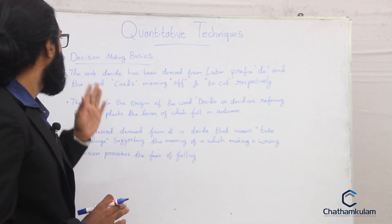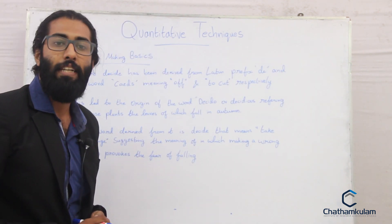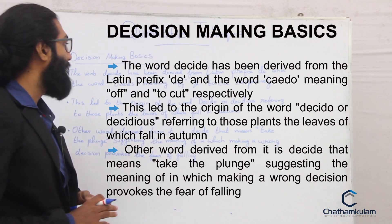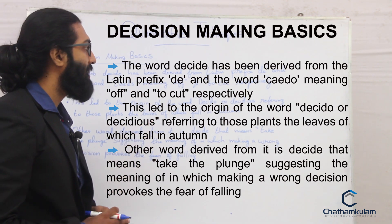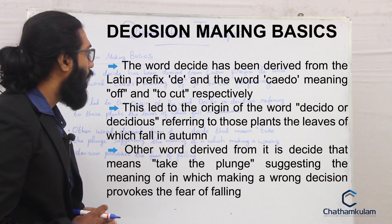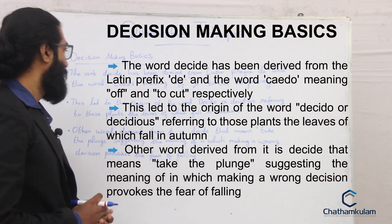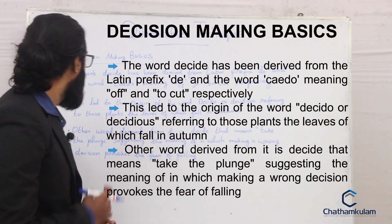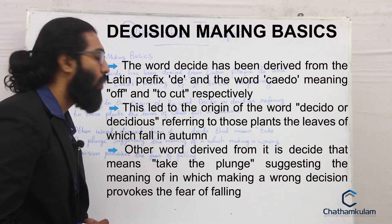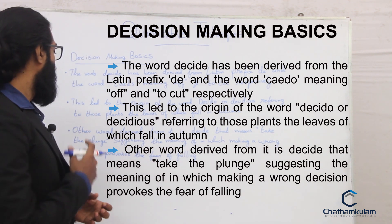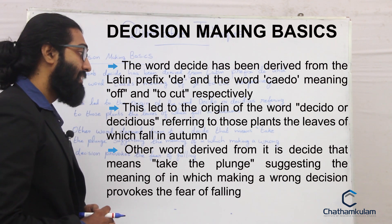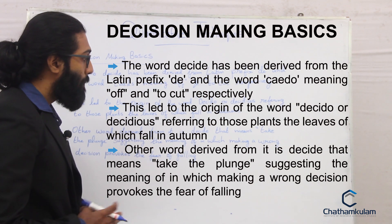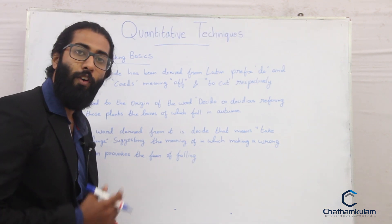Next we will be looking into decision making basics. Decision making pervades all aspects of business. The verb 'decide' has been derived from the Latin prefix 'de' and the word 'caedere', meaning 'of' and 'to cut' respectively. This led to the origin of the word 'decidere' or 'deciduous', referring to those plants the leaves of which fall in autumn. The other word derived from it is 'decide', meaning taking the plunge — suggesting that making a wrong decision provokes the fear of falling.